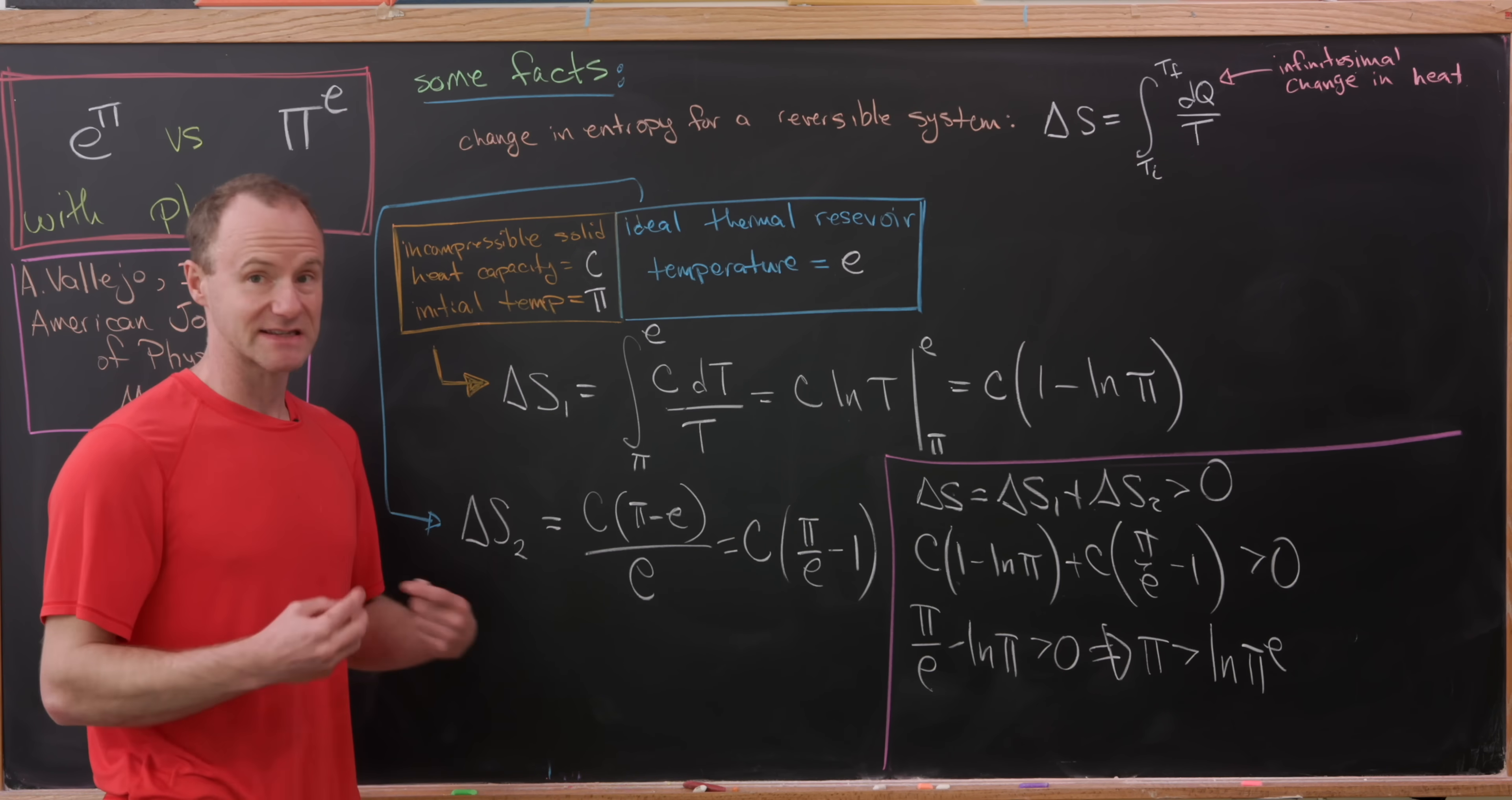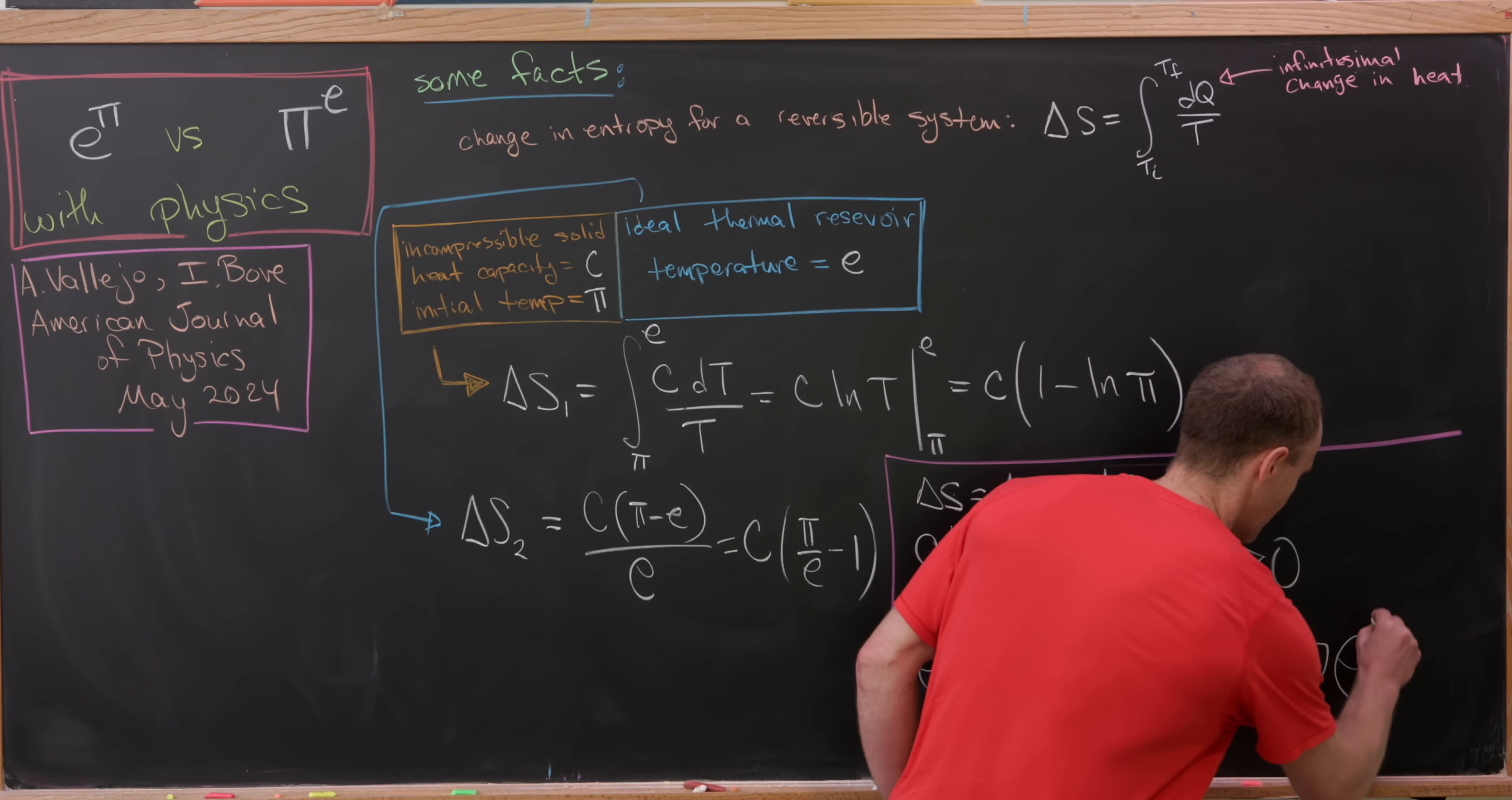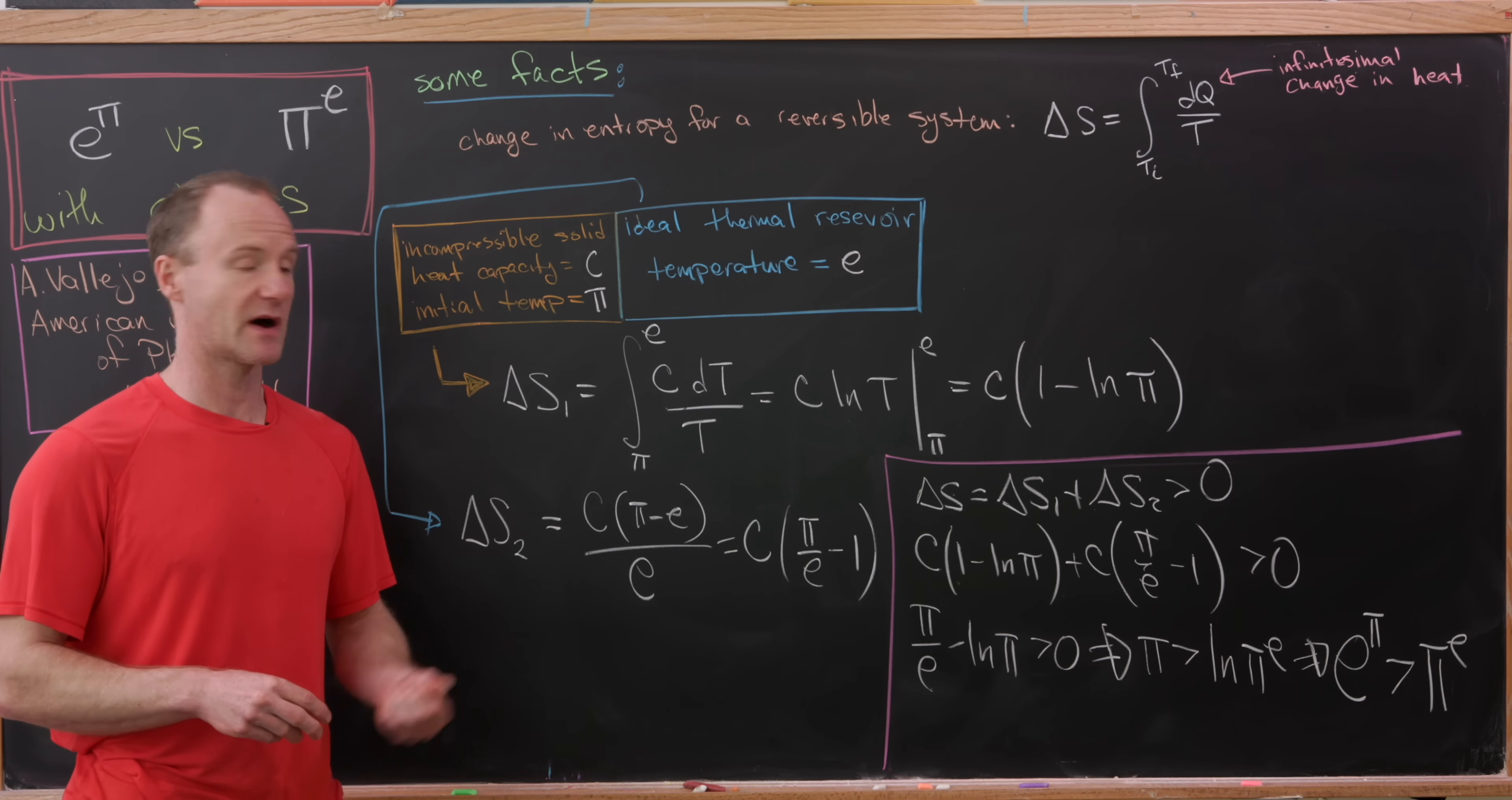And then, finally, as a last step, we can exponentiate both sides of this equation. And we'll be left with E to the pi is bigger than pi to the E. But, that's exactly what we wanted to do. We wanted to determine which one was larger, pi to the E or E to the pi. And we've done it. And that's a good place to stop.